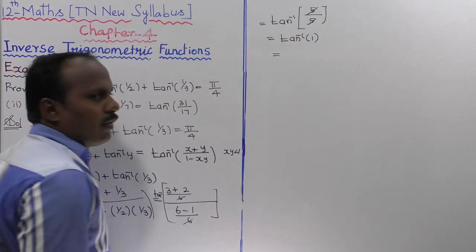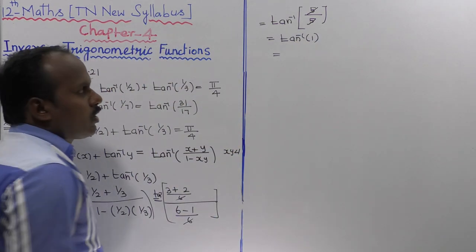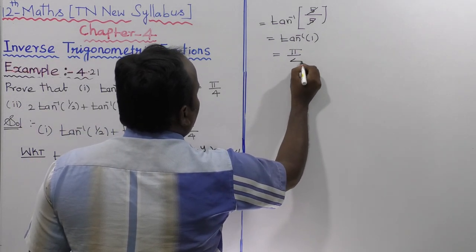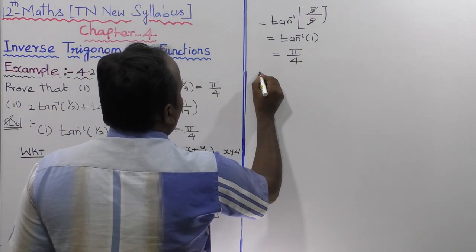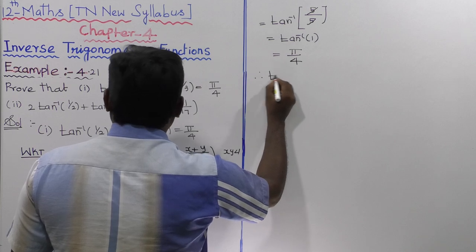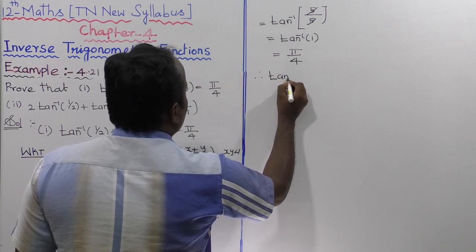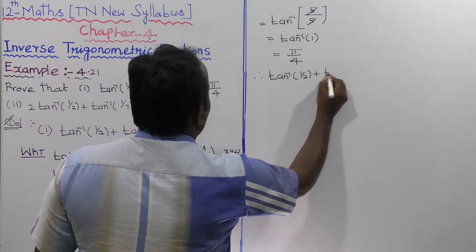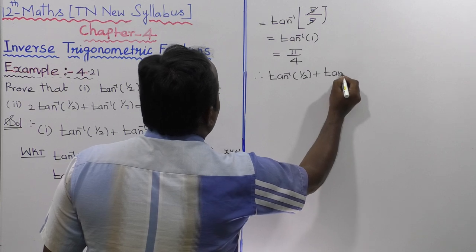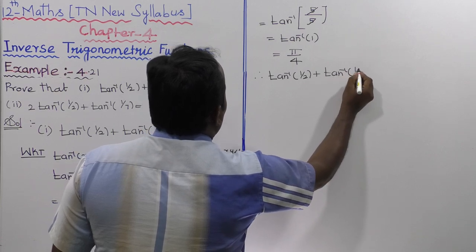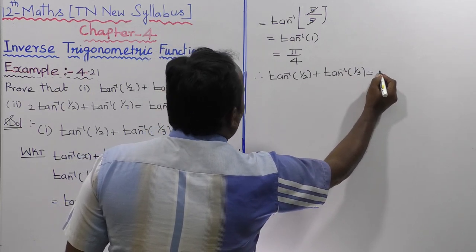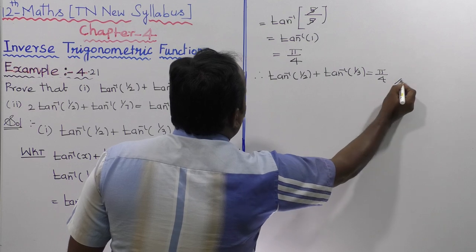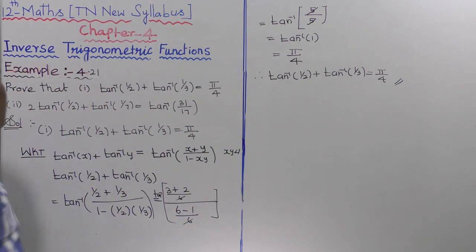tan inverse of 1 means 45 degrees, and 45 degrees in radians is equal to π by 4. Therefore, tan inverse of 1 by 2 plus tan inverse of 1 by 3 is equal to π by 4. The first subdivision is completed.